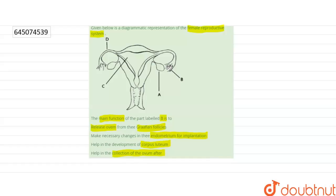This is a diagram of the female reproductive system. Part D is the fallopian tube, part A is the ovary, part C is the uterus, and part B is the fimbriae. Fimbriae are finger-like projections.